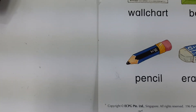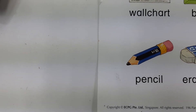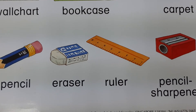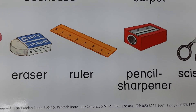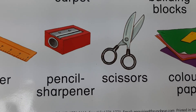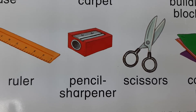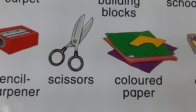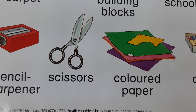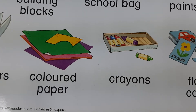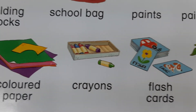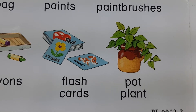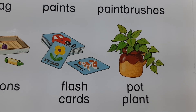Teacher, what is this? This is a pencil. This is an eraser. This is a ruler. This is a pencil sharpener. These are scissors. These are colored paper. These are crayons. These are flashcards. This is a pot plant.